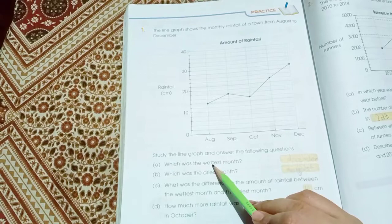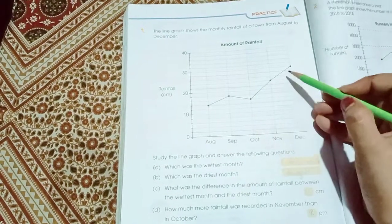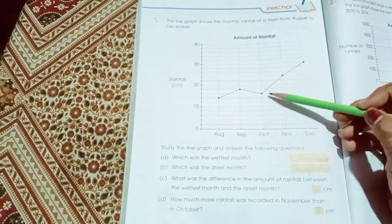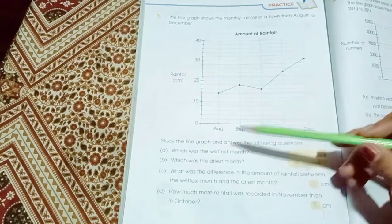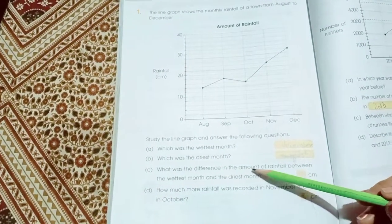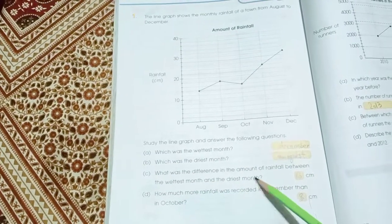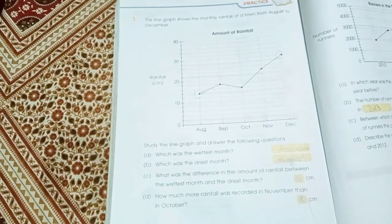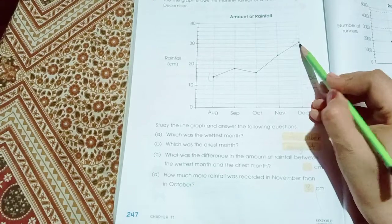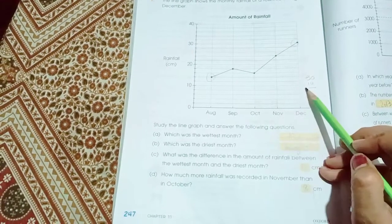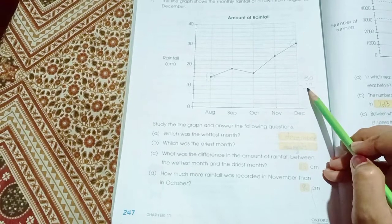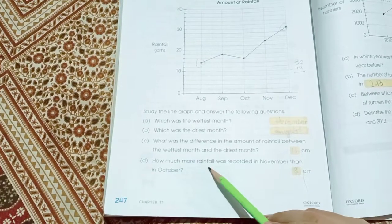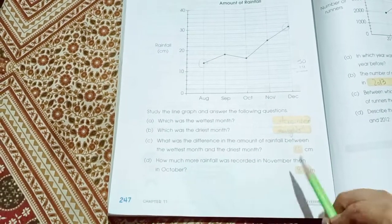Page number 247. Which was the wettest month? So the month is December. Which was the driest month? The driest month is August. What was the difference in amount of rainfall between the wettest month and the driest month? The difference between these two months is 16, because in December the amount of rain is 30 and in August the amount is 14. So when we subtract both, we get the answer which is 16.